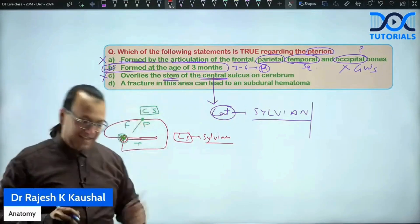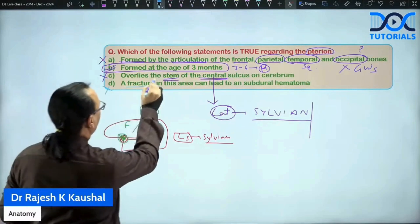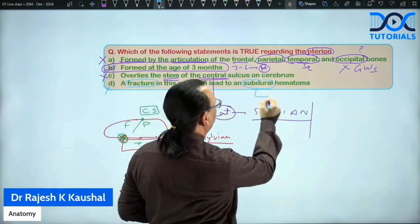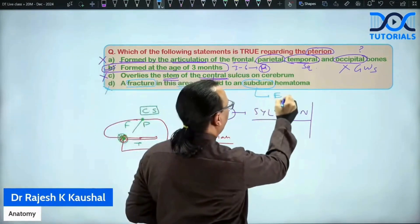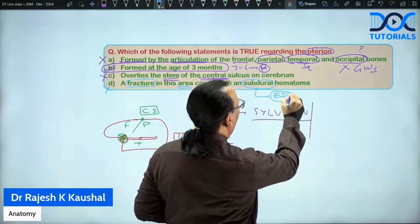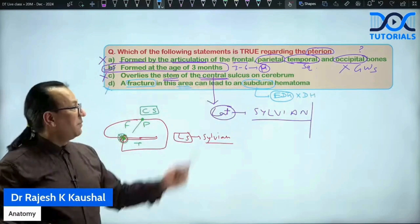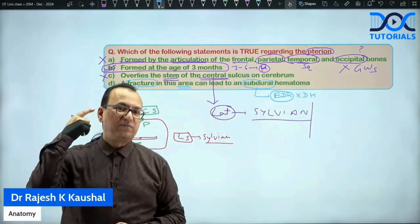And what about choice number D? It is also wrong. Why choice number D is wrong? Because a fracture in this area can lead to not subdural hematoma. It will be extradural or epidural hematoma.